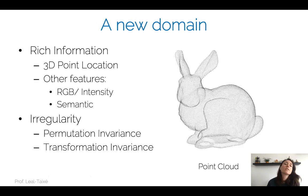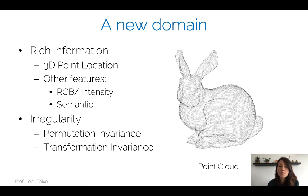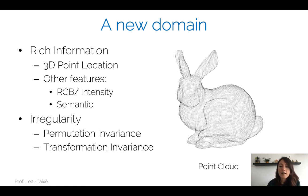So what happens when we jump into a new domain? For example, point clouds. Point clouds are very rich in information — we have the 3D point location of objects, we can even have point locations of entire cities that we can reconstruct. We can assign semantic information to a point cloud, and also RGB values from an image. There is a lot of information that point clouds can contain, but there is one catch: point clouds are irregular.